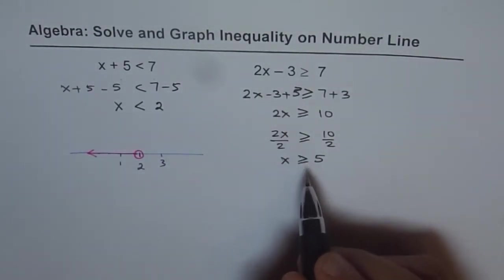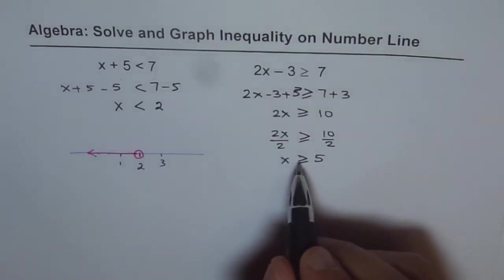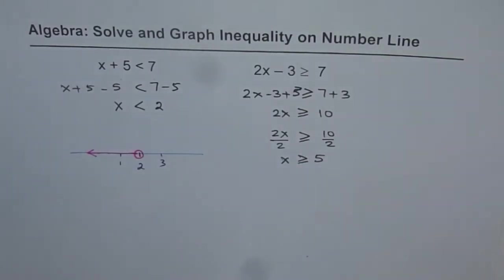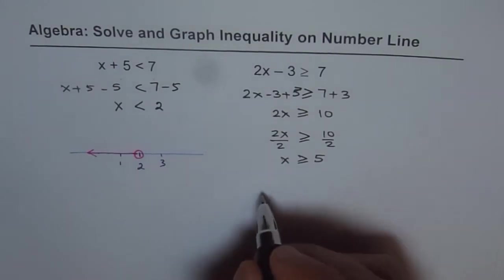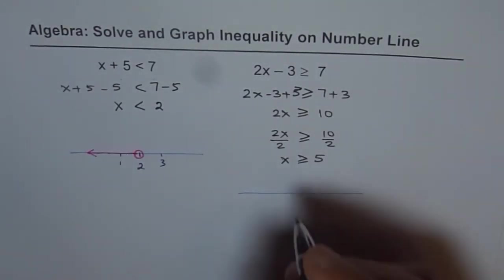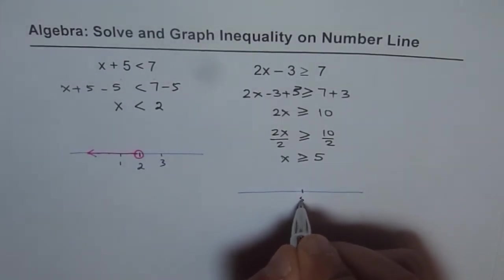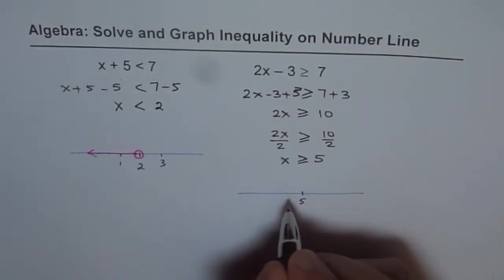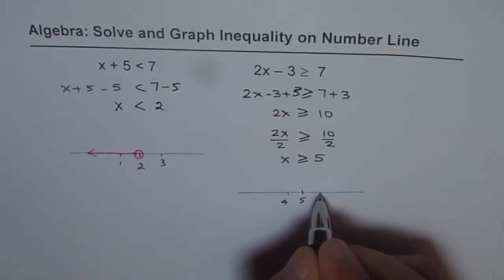So our solution of this inequality is that x is greater than or equal to 5. To represent this solution on a number line, what we can do is we can draw a number line and mark the critical point 5 along with its neighbouring numbers like 4, 5 and 6.